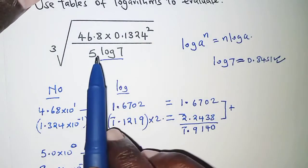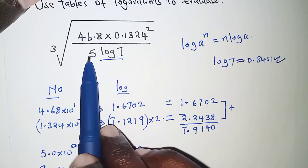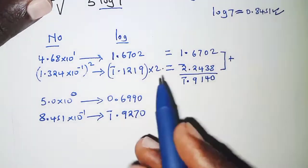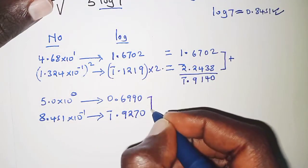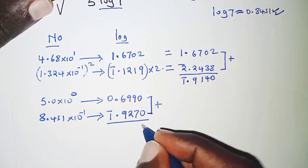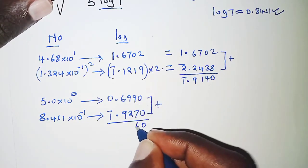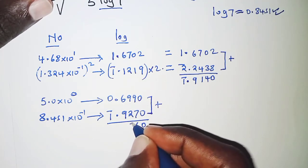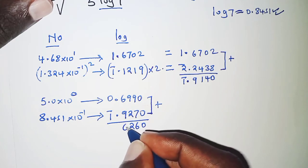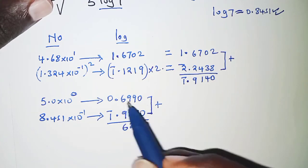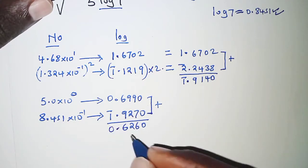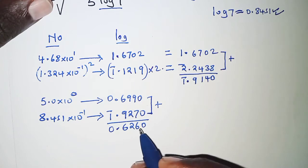On the denominator we have 5 log 7, so this is multiplication. That implies that their logarithms will be added. When we add the logs here we will have 0.6260.